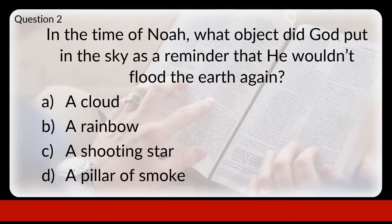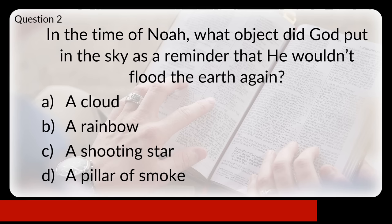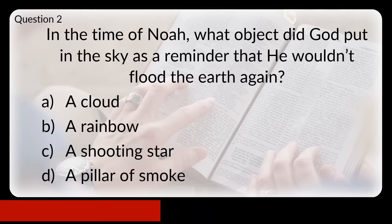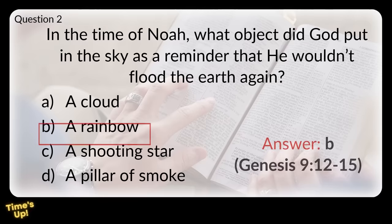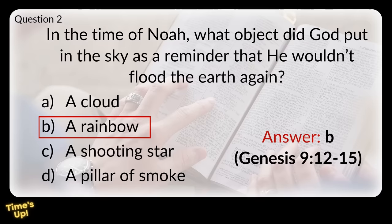Question two: in the time of Noah, what object did God put in the sky as a reminder that he wouldn't flood the earth again? Was that a cloud, a rainbow, a shooting star, or a pillar of smoke? The answer was B, a rainbow.